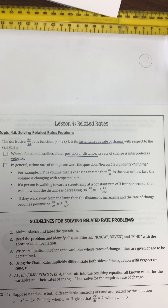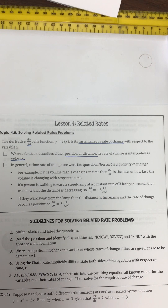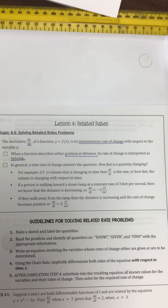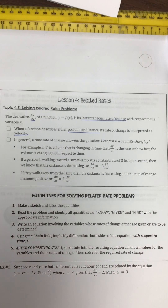So you're filling something up — how fast is that volume changing over a time interval? If a person is walking towards a street lamp at a constant rate of 3 feet per second, then we know the distance is decreasing because they're walking towards it at negative 3 feet per second. If they walk away, then that distance is increasing.